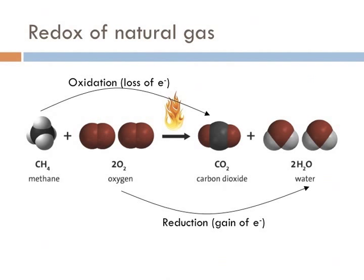In the formation of water, an oxygen atom combines with two hydrogen atoms and gains a negative two charge, because there are two hydrogens each with a plus one charge. Therefore, oxygen gained eight electrons — therefore, oxygen was reduced. For every oxidation there is a reduction, and for every reduction there is an oxidation. These are known as redox reactions.